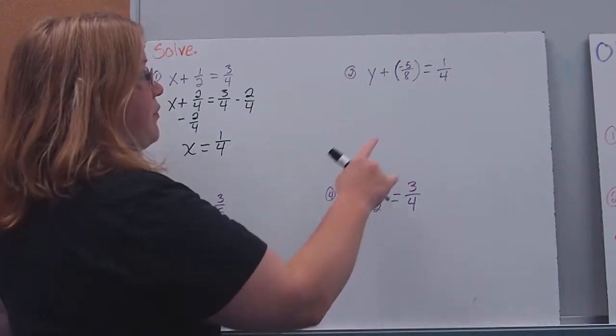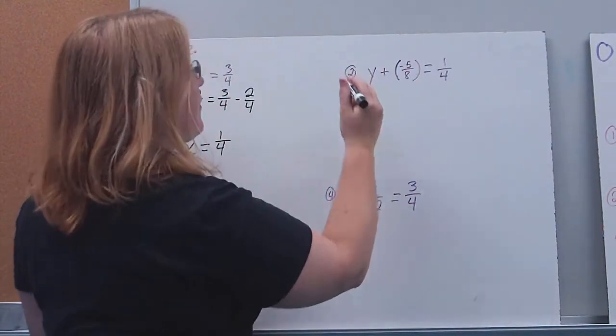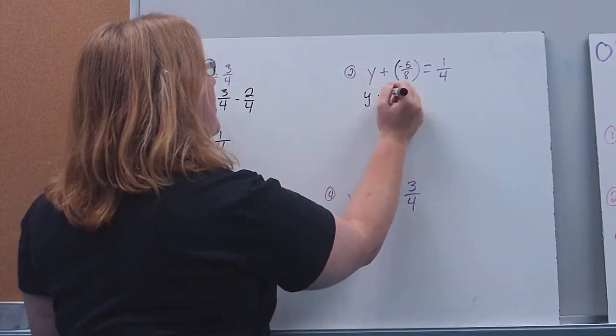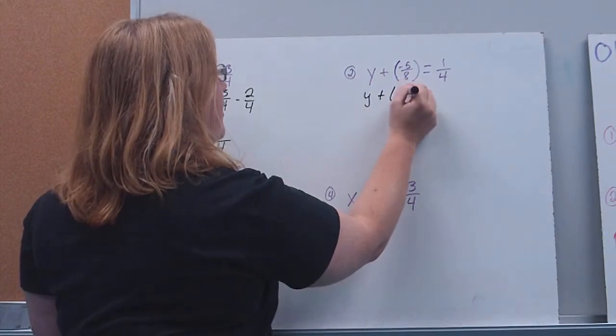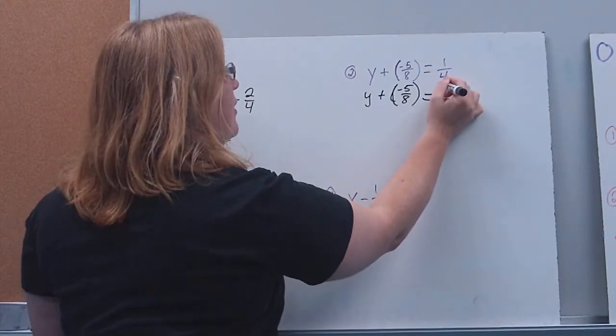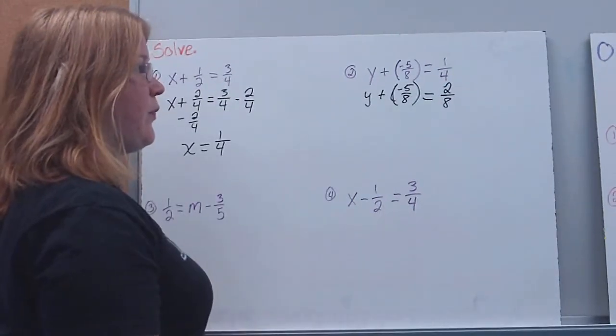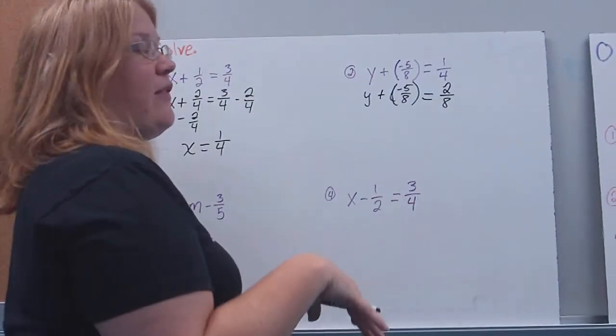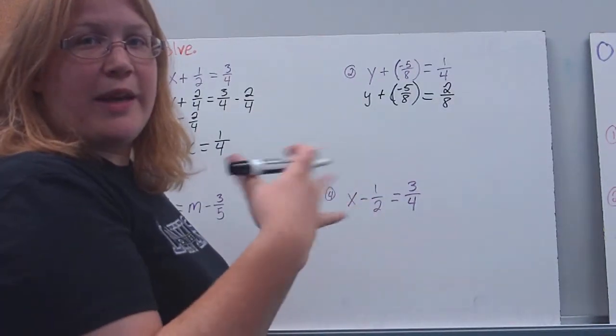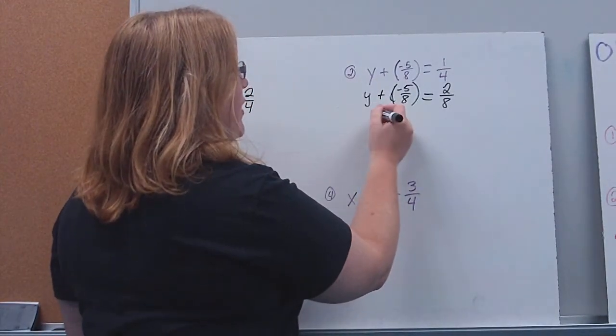All right. Over here, you'll notice I'm adding a negative number. Well first, let's not get ahead of ourselves. Let's rewrite it so that everything's got a common denominator. I notice there's a four and an eight, so eight's going to be my common denominator. One-fourth becomes two-eighths. Now I'm going to go about solving it. So the first thing we want to do is rewrite it as an equivalent fraction. I'm adding, so I want to subtract.